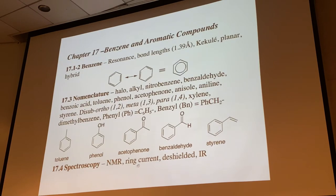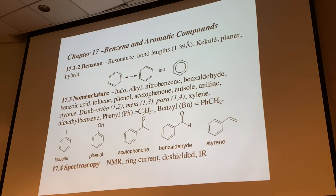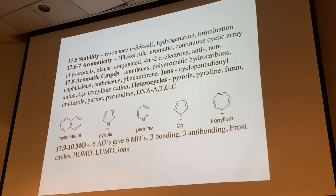We'll look at the characteristics of aromaticity from NMR: the ring current and the deshielded absorption of hydrogens on the benzene ring, around 7 ppm. Stability is about 35 kcal/mol compared to an isolated cyclotriene. Hydrogenation and bromination reactions are fundamentally different with benzene due to its aromatic character.